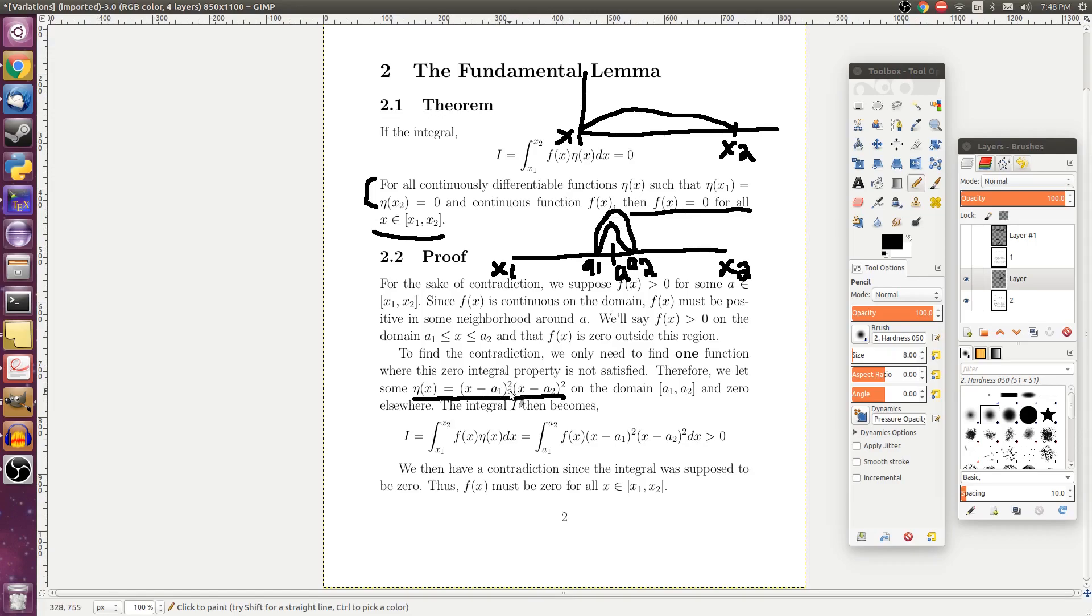And then we'll suppose it's positive. We know it's positive because each of these terms is squared. So you're multiplying two positive numbers on that domain. And then we'll say that this eta of x is zero outside this region. So it's zero from here to here and here to here.